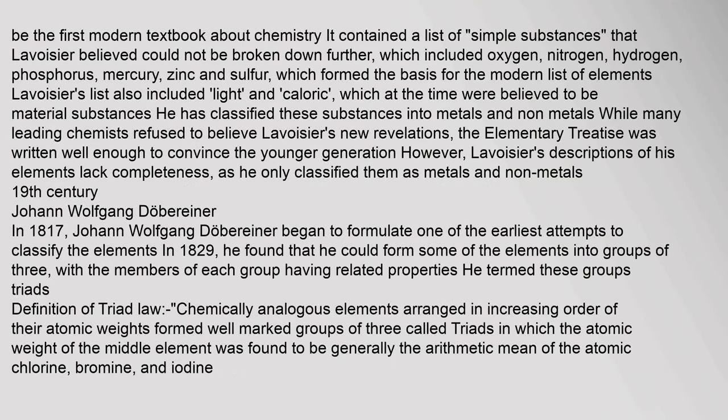Lavoisier wrote the first modern textbook about chemistry. It contained a list of simple substances that he believed could not be broken down further, which included oxygen, nitrogen, hydrogen, phosphorus, mercury, zinc and sulfur — forming the basis for the modern list of elements. Lavoisier's list also included light and caloric, which at the time were believed to be material substances.